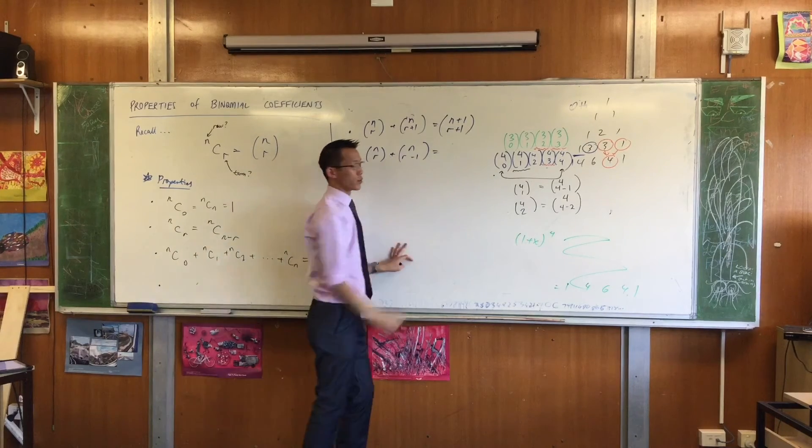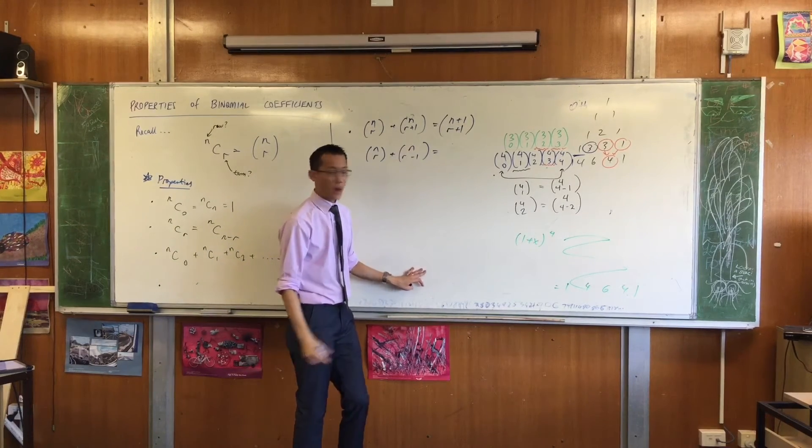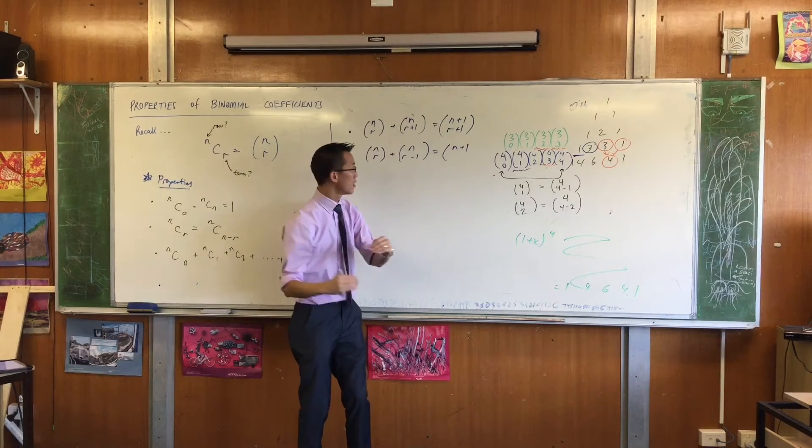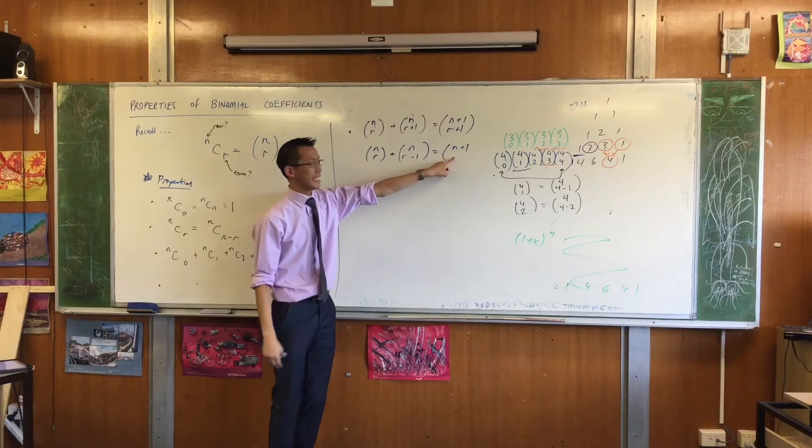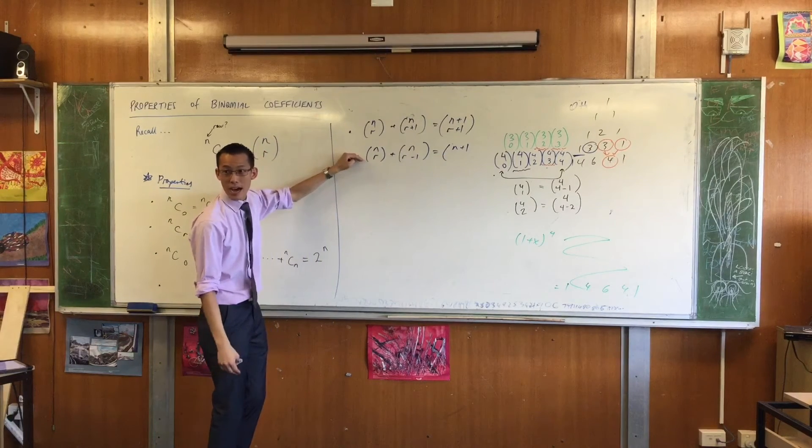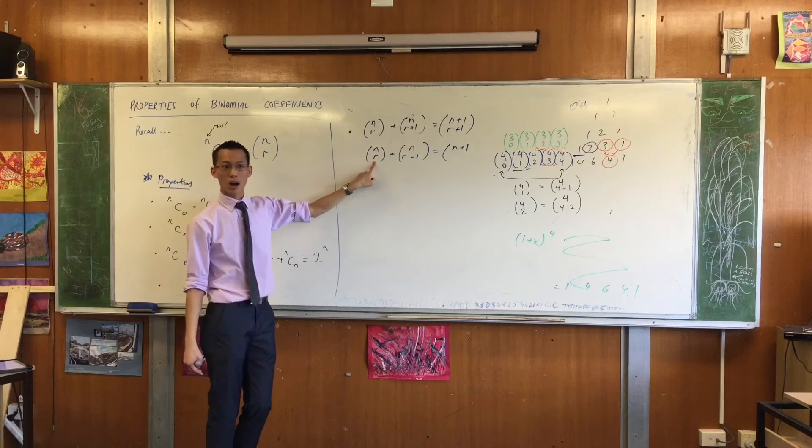So what's that equal to? Well it's still on the next row, right? I have to go a row down. Which term along is it? It's the third one, which in this scheme here I've identified as R. Do you agree?